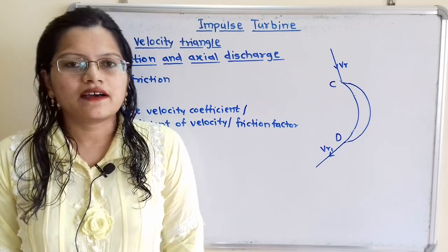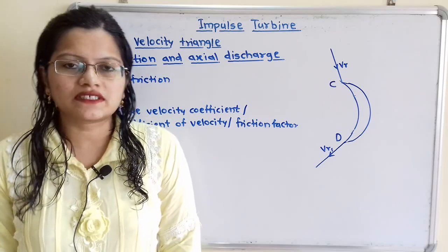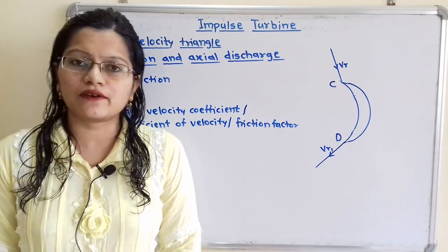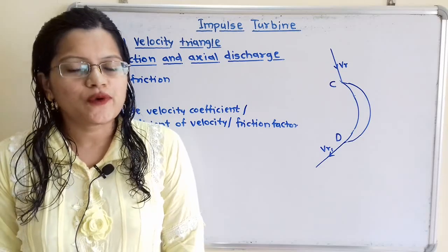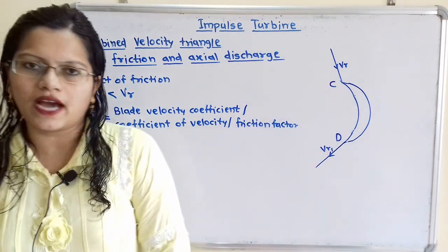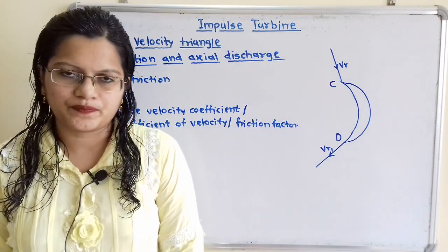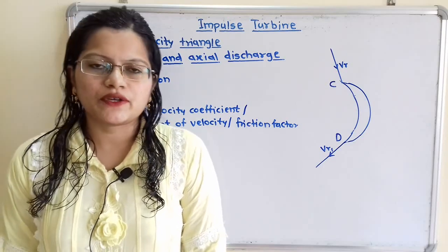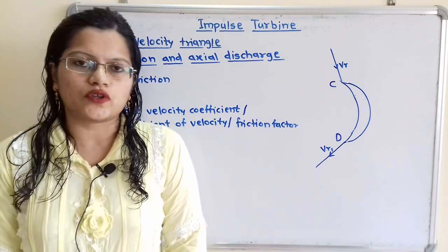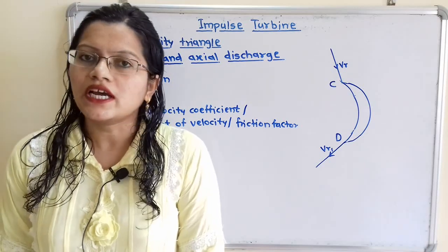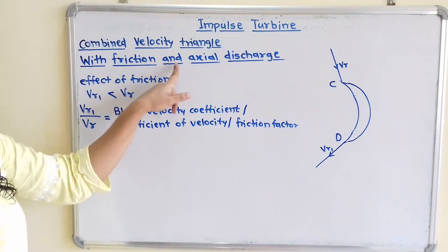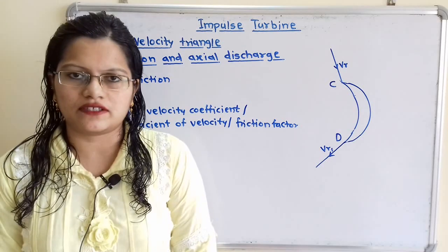In an earlier video, we discussed that while drawing the combined velocity triangle diagram, we have to take Vr equal to Vr1. In this video, we are going to discuss how to draw the combined velocity triangle diagram with the effect of friction as well as axial discharge.